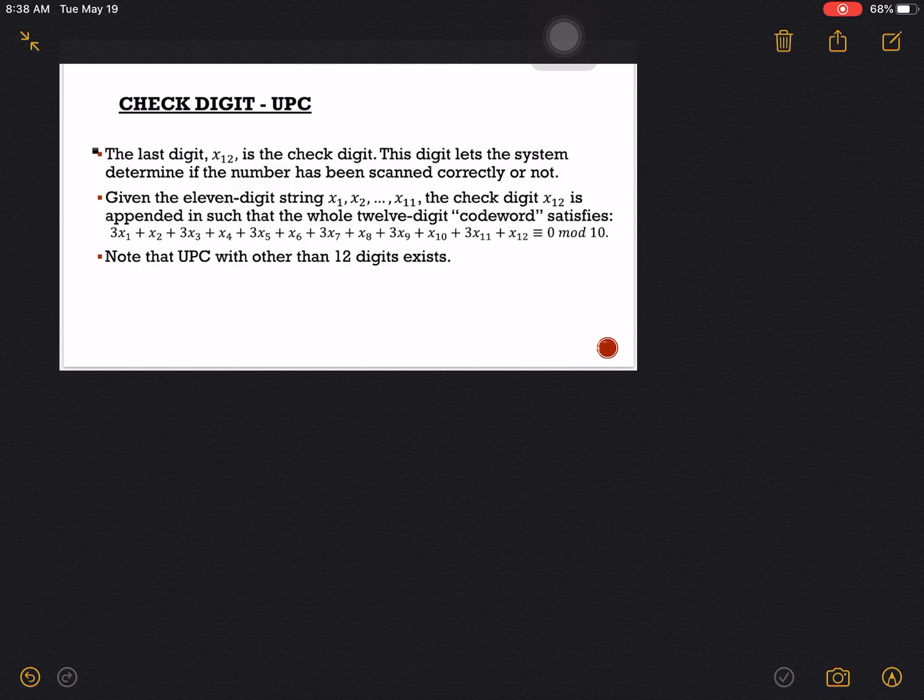Where will we have the multiplier 3? Observe that we only multiply 3 to numbers on the odd positions. We have there 3x₁, 3x₃, so meaning we are to multiply 3 to first, third, fifth, seventh, ninth, eleventh digits.